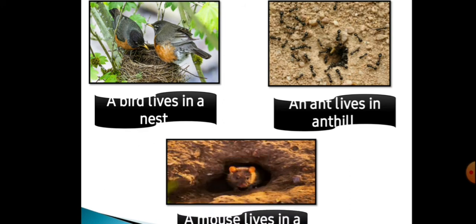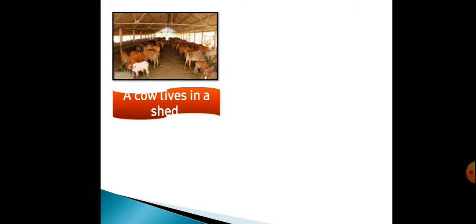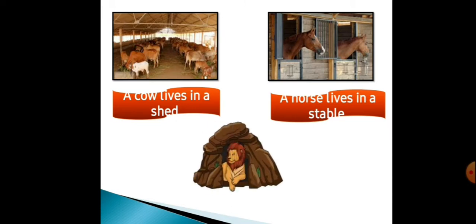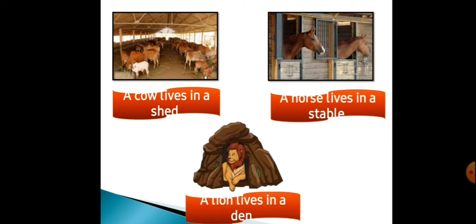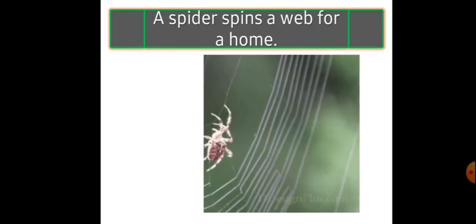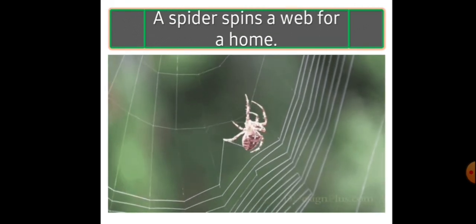A mouse lives in a hole. Matlab mouse ek hole mein rehta hai. A cow lives in a shed. Cow woh shed mein rehti hai, unka ghar jo hai woh people banate hain. A horse lives in a stable. Horse woh stable mein rehte hain, unka ghar bhi people banate hain. A lion lives in a den, jo forest mein hota hai. A spider spins a web for a home. Jo spiders hain, woh aise net banate hain us mein rehne ke liye.